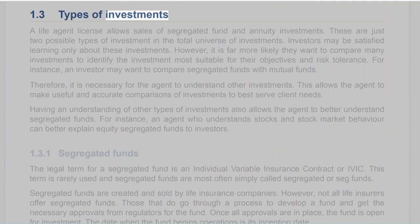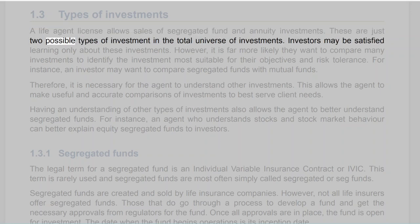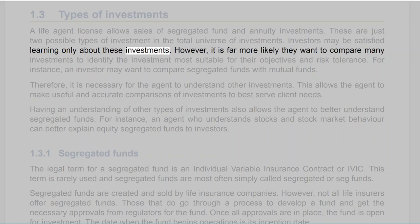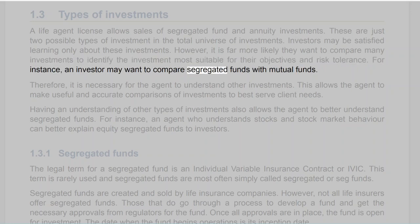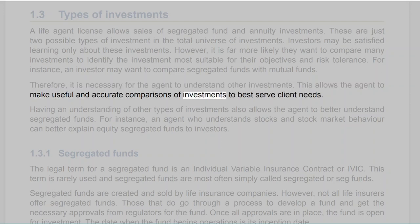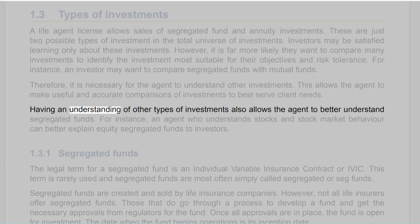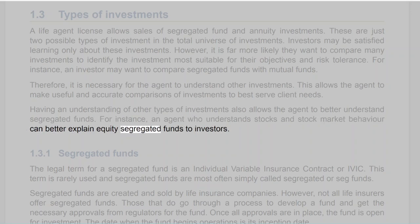Section 1.3: Types of Investments. A life agent license allows sales of segregated fund and annuity investments — just two possible types in the total universe of investments. Investors may want to compare many investments to identify the most suitable for their objectives and risk tolerance. For instance, an investor may want to compare segregated funds with mutual funds. Therefore, it is necessary for the agent to understand other investments, which allows accurate comparisons to best serve client needs. Understanding other types of investments also allows the agent to better understand segregated funds — for example, an agent who understands stocks can better explain equity segregated funds.